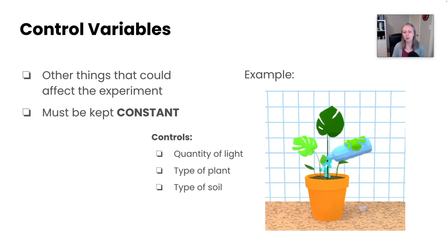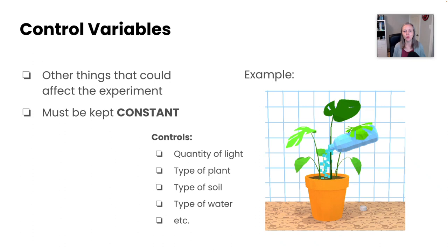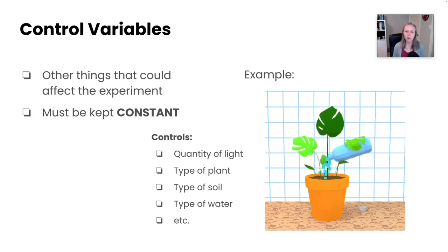You also want to control the type of soil as well as the type of water. And this can go on for quite a bit. Like you really do have to put a lot of thought into what you are controlling for in your experiment and making sure everything besides the independent and dependent variable is being kept constant.